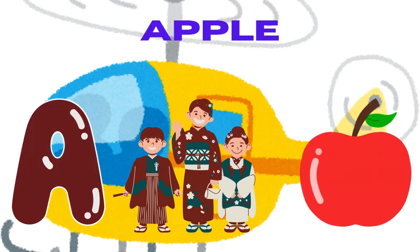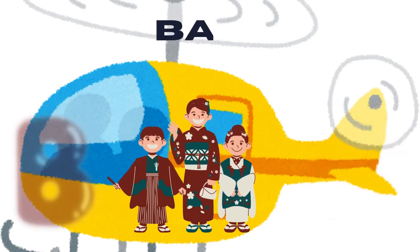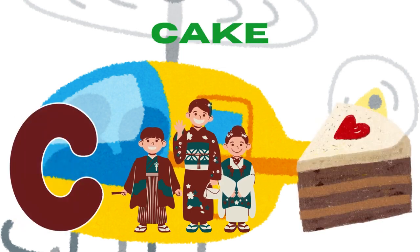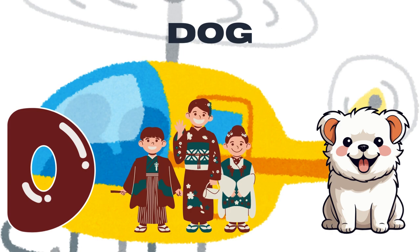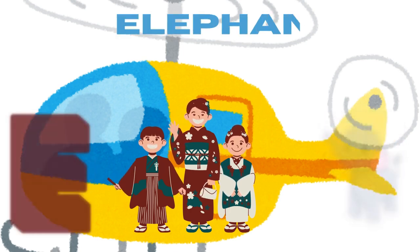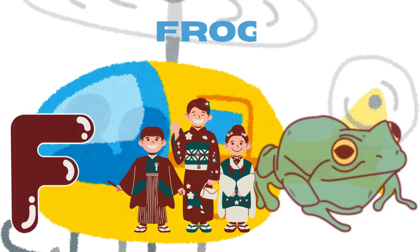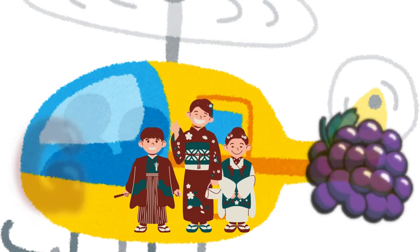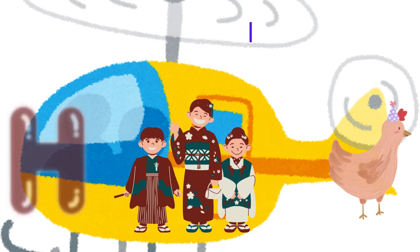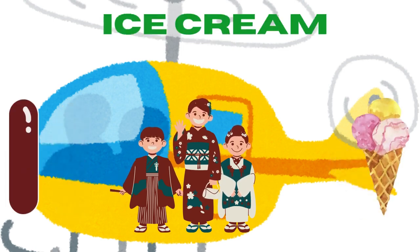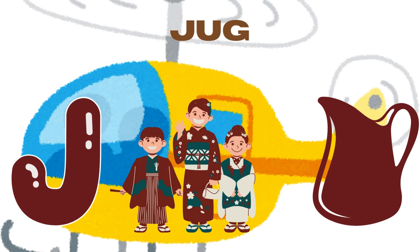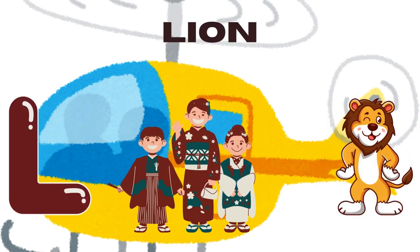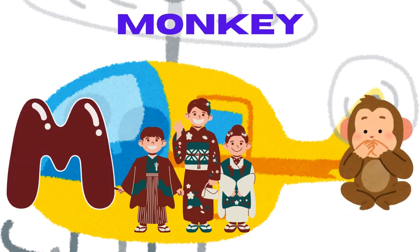A for apple, B for bun, C for cake, D for dog, E for elephant, F for frog, G for grapes, H for hen, I for ice cream, J for jug, K for king, L for lion, M for monkey.